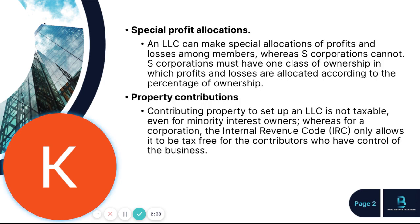Another major attractive factor is special profit allocations. LLCs can make special allocations of profits and losses amongst its members, whereas corporations typically cannot, as corporations must have one class of ownership in which profits and losses are allocated according to percentage of ownership. With an LLC, that's not necessarily the case — you can distribute profits and losses however you wish, and typically that is laid out in the operating agreement.